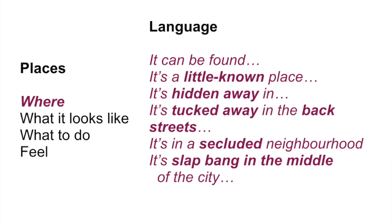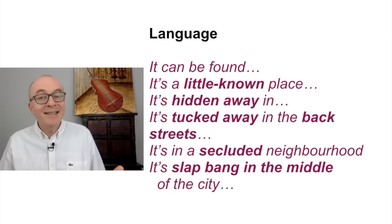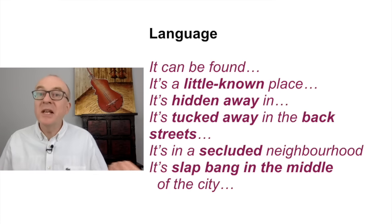So let's begin with where it is. The classic answer everybody says is 'I live in London, which is located in the south of England.' Let's mix it up a bit. You can say 'it can be found in the south of England' — 'I live in Manchester, which can be found in the north of England.' You can use this for cities, buildings, houses, parks — 'There's a lovely park which can be found not far from my house.' If it's not very well known, you can say 'it's a little known place near my house.'